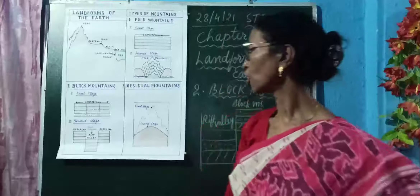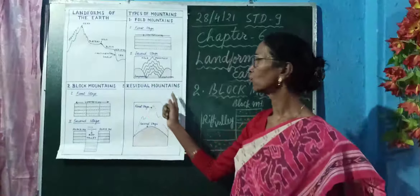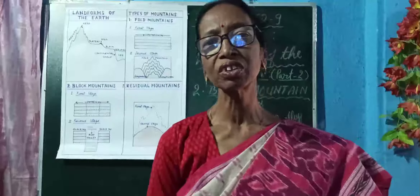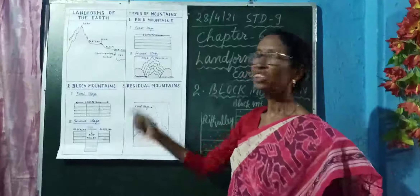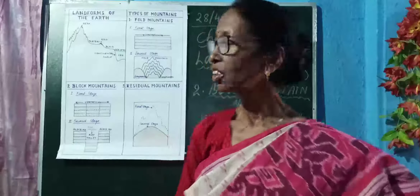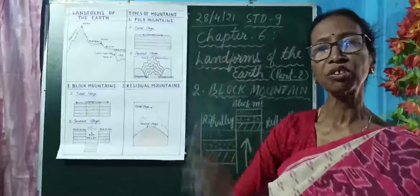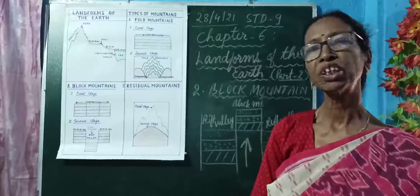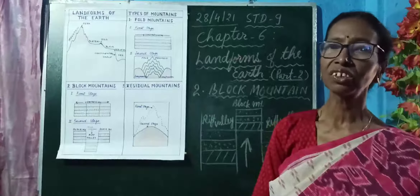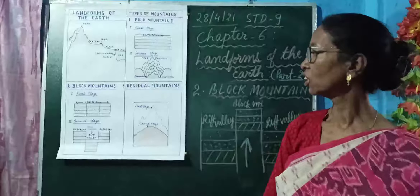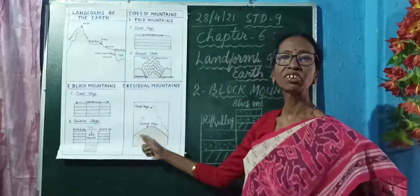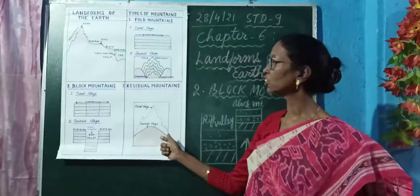The next, third type of mountain is residual mountains. What do we mean by residual mountains? The word 'residue' indicates it is the left part of a mountain. In the ancient period, many high mountains were formed millions of years ago. After many million years, they have been changed into low-lying, dome-shaped mountains with gentle slopes — these are the residual mountains.